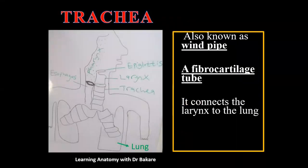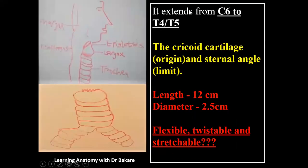The trachea is also known as the windpipe. It is a fibrocartilaginous structure, meaning it is made up of fibrous membrane and cartilage. It extends from the sixth cervical vertebra to the level of T4–T5 thoracic vertebra, where it bifurcates into two to supply the two lungs.